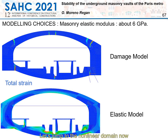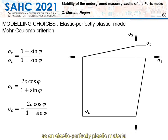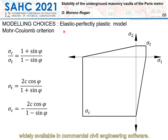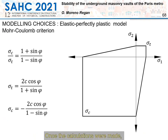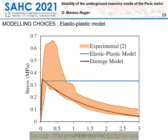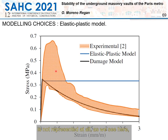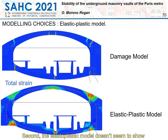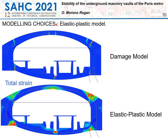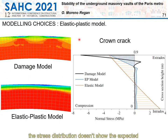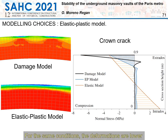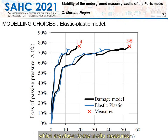In the non-linear domain, it is not uncommon to assume masonry as an elastic perfectly plastic material using the Mohr-Coulomb criterion, widely available in commercial civil engineering software. Cohesion and friction angle were set to respect the Mohr-Coulomb criterion. The main differences are: first, the strain softening behavior typical of quasi-brittle materials such as masonry or concrete is not represented at all; second, the elastoplastic model doesn't show proper strain concentration near the cracks; and third, the stress distribution at the crown crack doesn't show the expected compressive concentration at the extrados. Deformations are also lower than those from the damage model, which are closer to in-situ measurements.